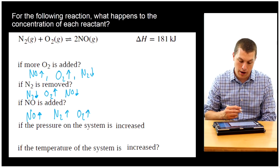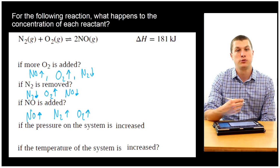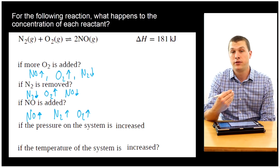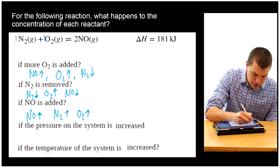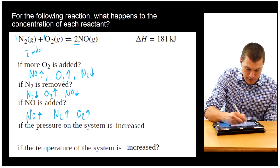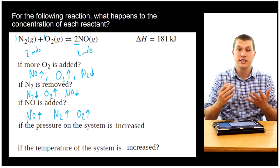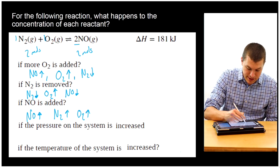What about if the pressure of the system is increased? Let's count up our gas moles, because higher pressures favor the side with fewer gas moles. Here on the reactant side I have one N₂ and one O₂, so just two moles of gas. On the product side I also have two moles of gas. So which side is favored? It's a tie — so it doesn't matter what the pressure of the system is, the equilibrium will stay the same. This actually brings about no change.